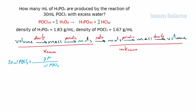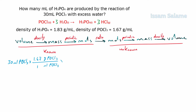We put grams in the numerator, and this relation between milliliters and grams comes from the density. The density of POCl3 is 1.67 g/mL, so we put 1.67 next to grams and 1 next to milliliters. The next step is to convert mass to moles: since we have grams of POCl3 in the numerator, we place it in the denominator of the next fraction and put moles of POCl3 in the numerator.